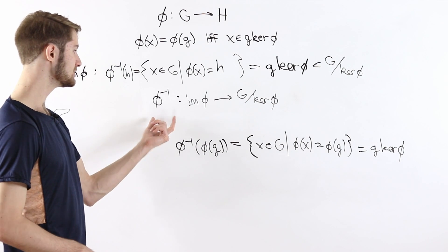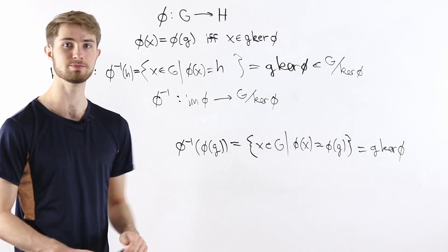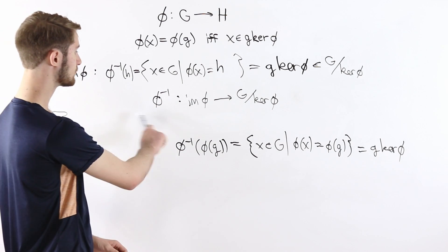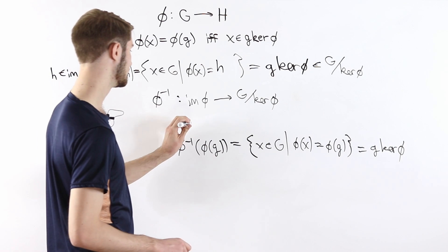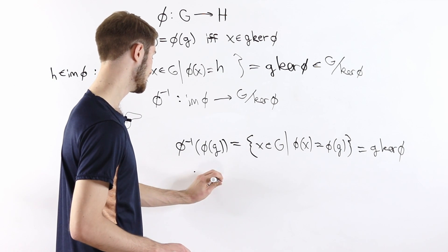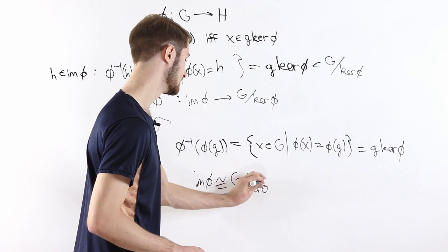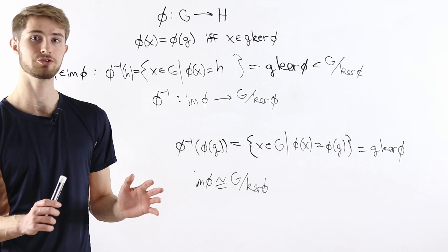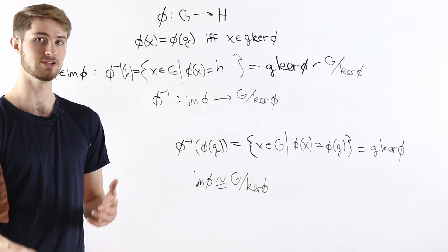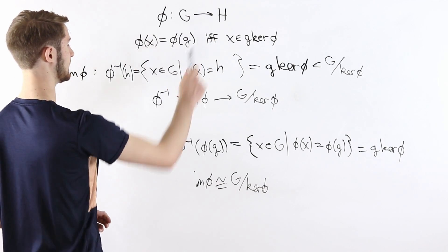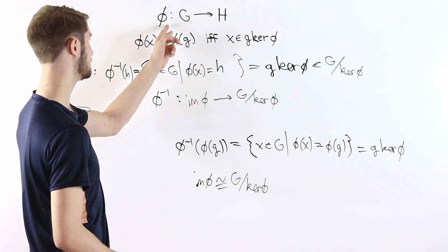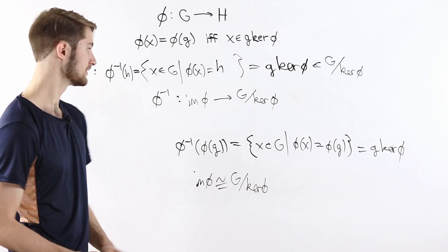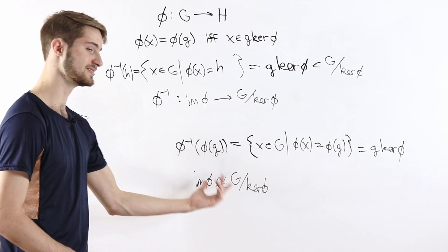We've now shown that the pre-image map phi inverse, going from the image of phi to G mod kernel of phi, is a group homomorphism that is injective and surjective — so it's an isomorphism. That gives us that the image of phi is isomorphic to G mod the kernel of phi, which is the first isomorphism theorem. This proves it without any tricks: whenever we have a group homomorphism, the pre-image map associated with it is naturally an isomorphism from the image of phi to G mod the kernel of phi.